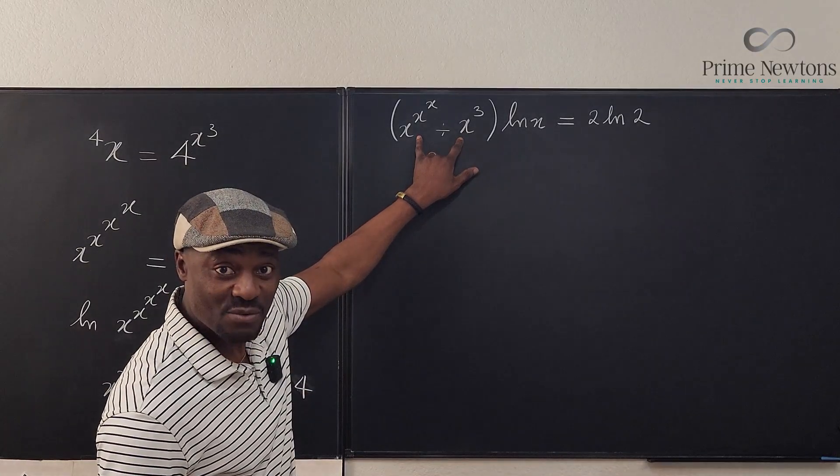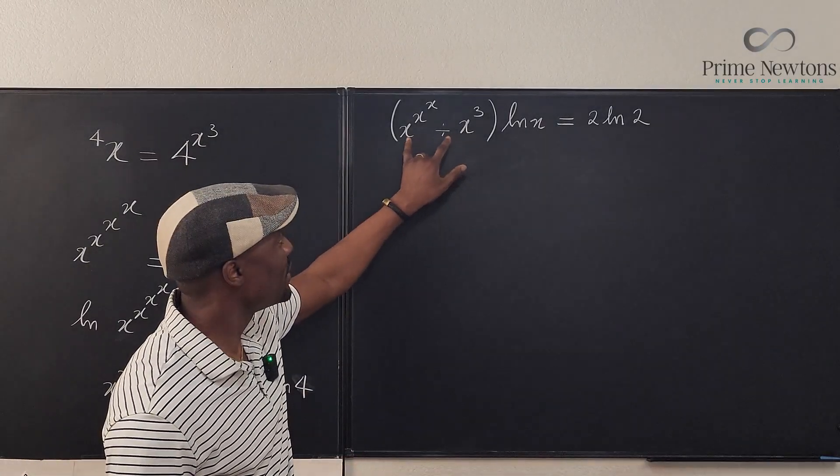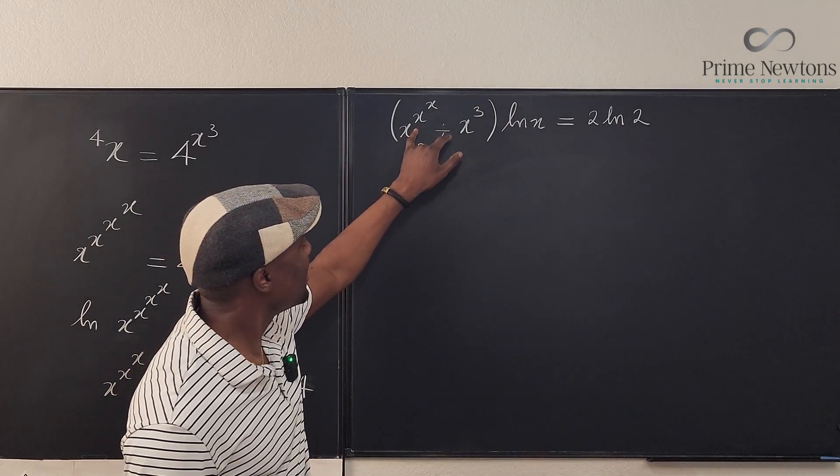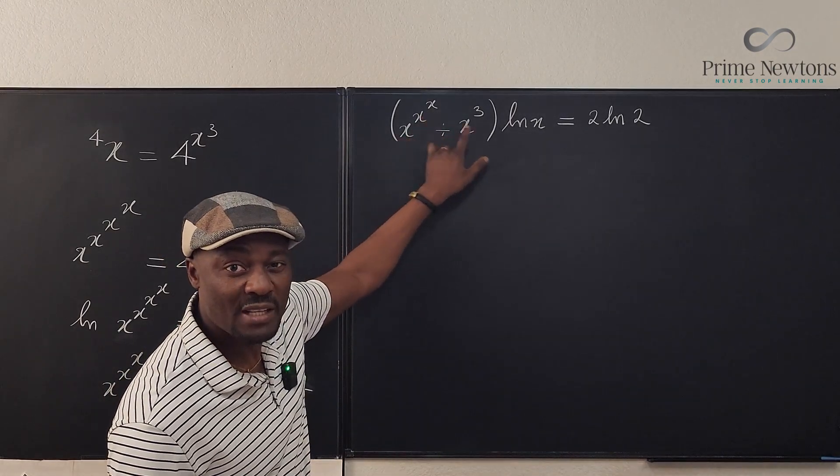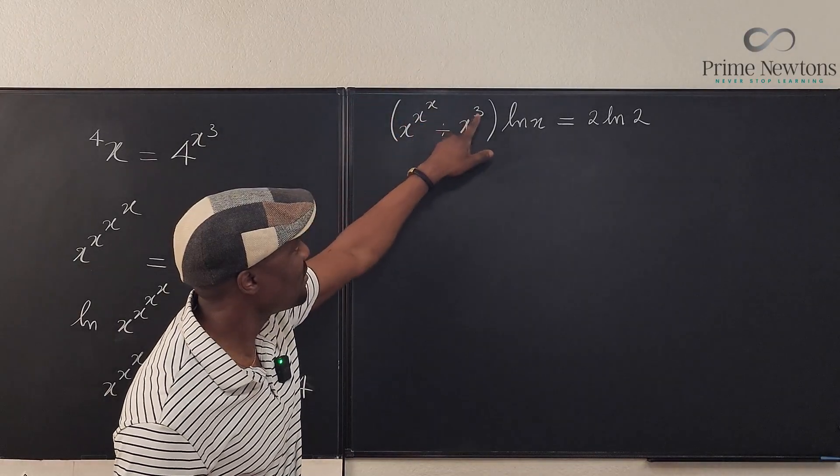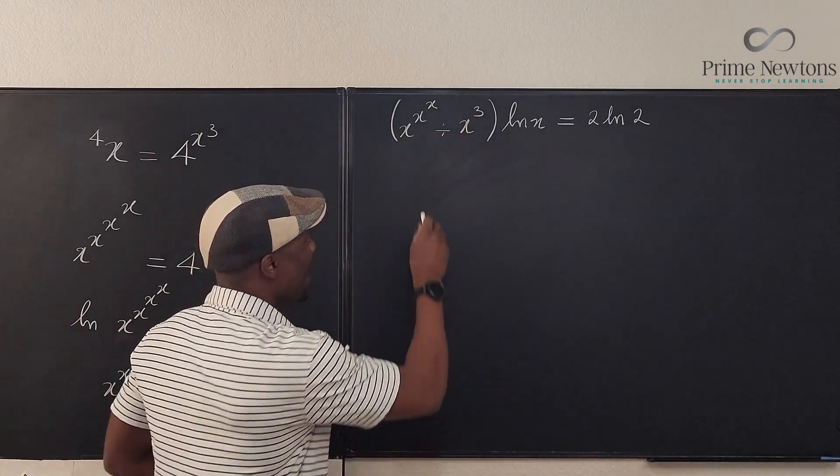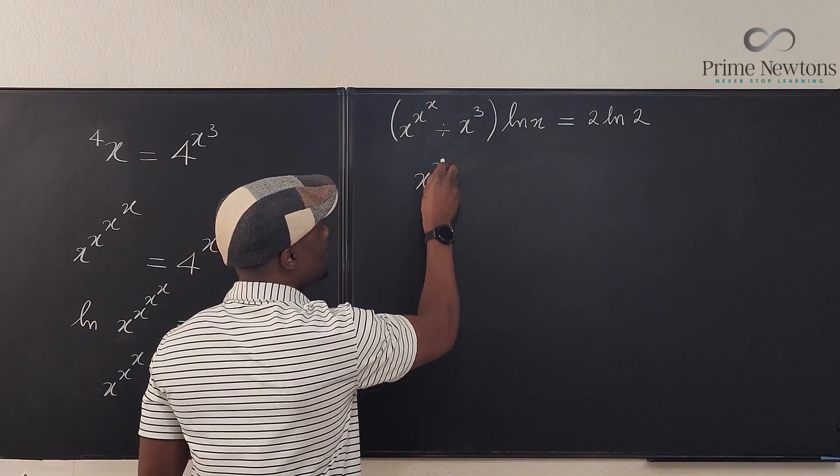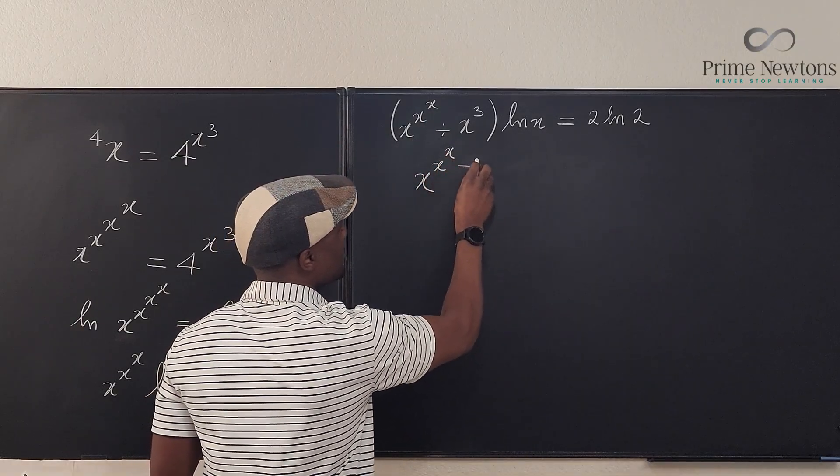This I can write as, remember when you're dividing two exponential expressions and the bases are the same, you can subtract the exponents. So the exponent here is x to the x, the exponent here is 3. So I'm going to write this as x raised to power x to the x minus 3 times the natural log of x.